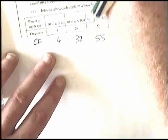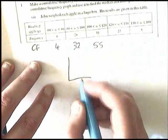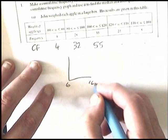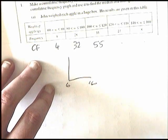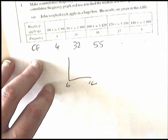Then you'll need to draw your graph. So your graph will need to go along from 60 to 160, because that will be the weights of the apples, and it'll need to go up to whatever your total cumulative frequency will be.